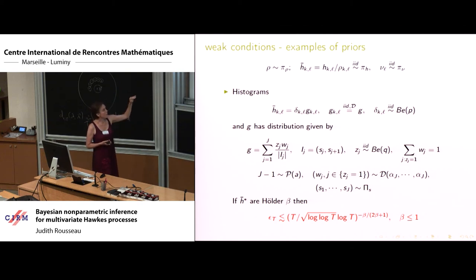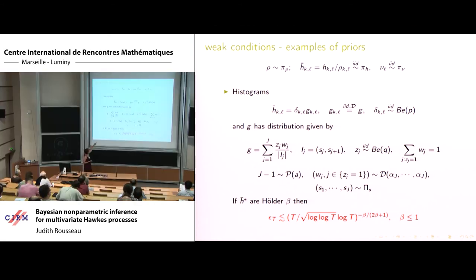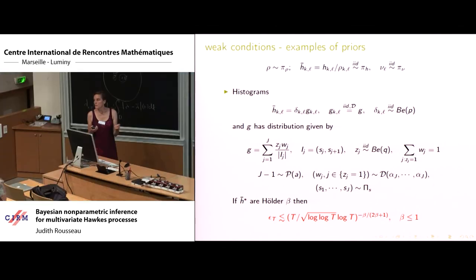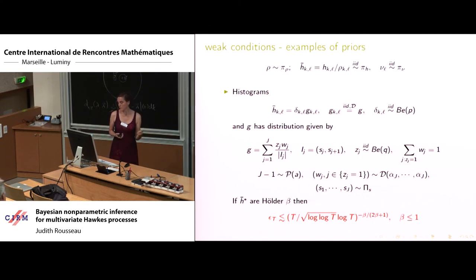With random histograms — whether random or fixed partition — what you get is: if the functions h-bar*_{KL} are Hölder with regularity beta < 1, then the posterior concentration rate is of order (T / log T)^{-beta/(2*beta+2*n)}, up to a log-log T term. Up to the log T term, this is the usual rate for estimating Hölder functions, the same as in density estimation. We don't have a lower bound for Hawkes processes, but it's expected that this is sharp up to log T.